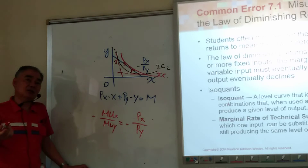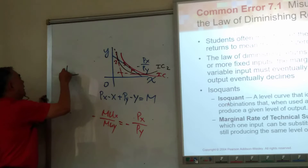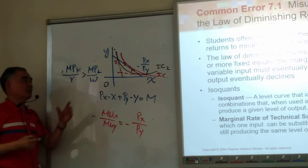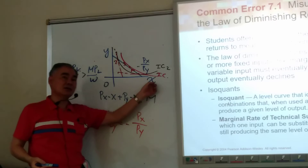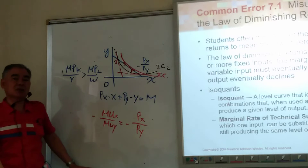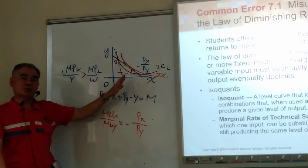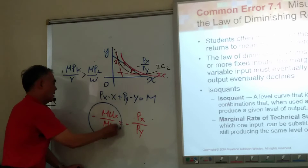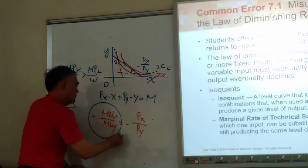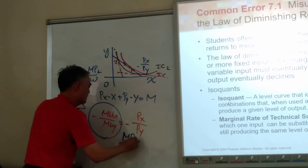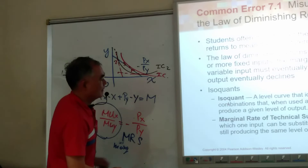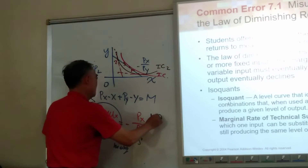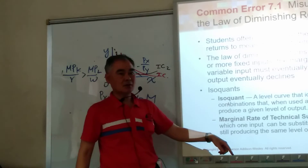Remember, we mentioned in the test: MPK over R greater than MPL over W. If it is like this — using L and K — basically, the analysis of consumer behavior applies to producers. For consumers, the slope of the indifference curve is called MRS — marginal rate of substitution. For producers, there's one more word: technical. So it's called MRTS.